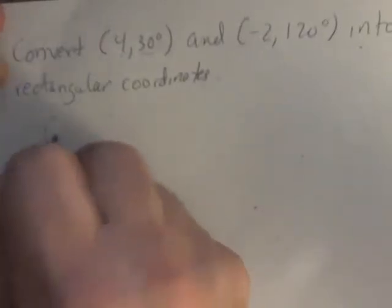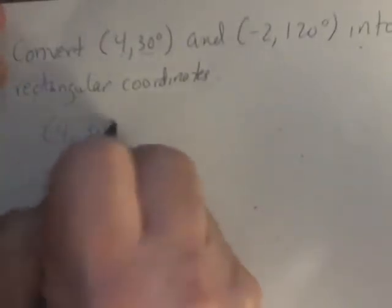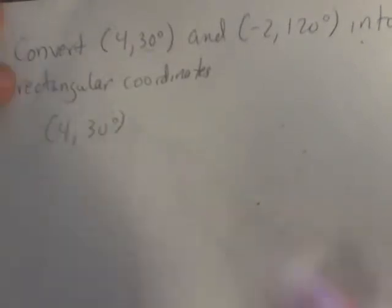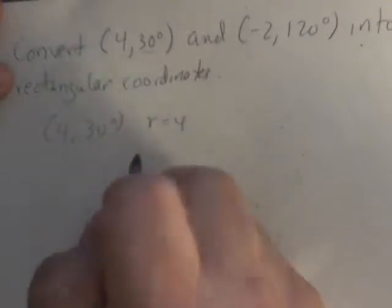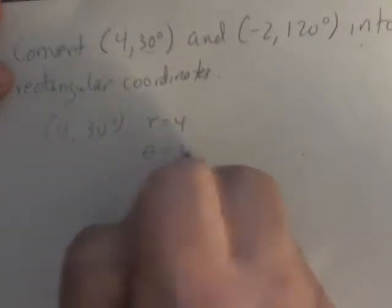For the first one, (4, 30°), R is 4 and our angle theta is 30 degrees.